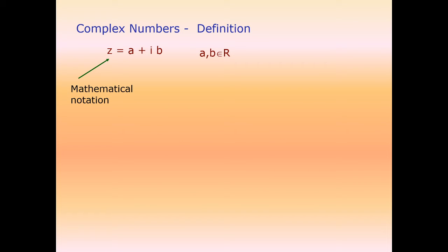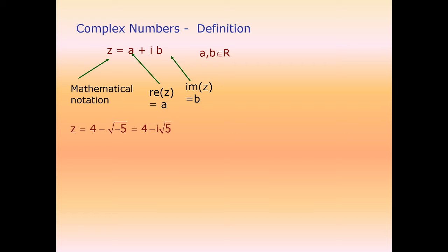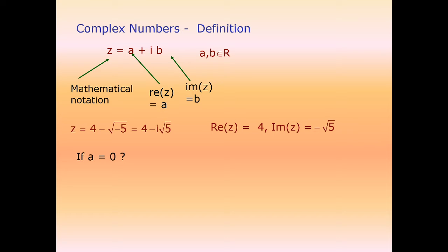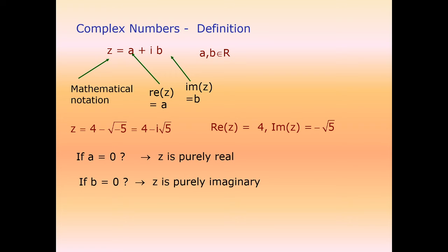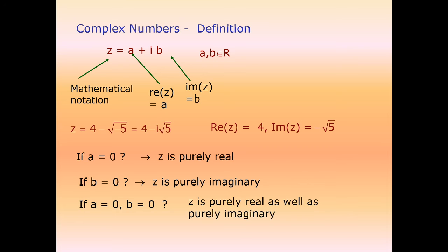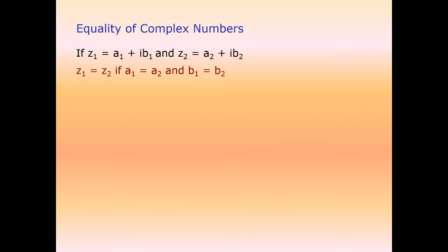A complex number is written in standard form as z = a + iota·b, where the real part of z is a and the imaginary part is b. If a = 0, z is purely imaginary; if b = 0, z is purely real. If both a and b are 0, z is both purely real and purely imaginary. Two complex numbers are equal if and only if their real parts are equal (a1 = a2) and their imaginary parts are equal (b1 = b2).